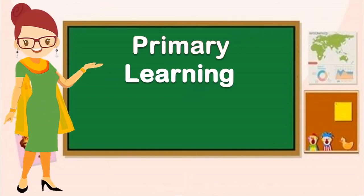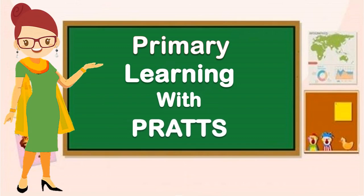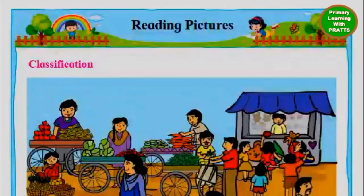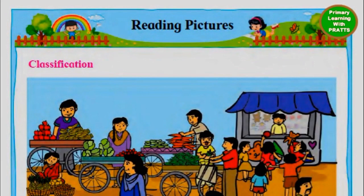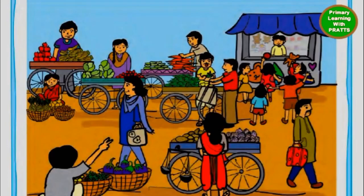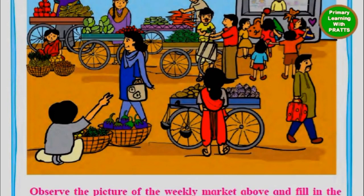Primary learning with practice. Today we will be doing reading pictures — picture comprehension — which in maths comes under data interpretation. You have a picture given in front of you and you have to answer questions based on it. Let's see what the questions are.